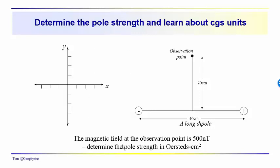We have a problem to solve. You are at an observation point 20 centimeters above the axis of a dipole. The distance between the poles of the dipole is 40 centimeters, and you are 20 centimeters above, along a line perpendicular to the axis of the dipole, located right at the center. The question is to determine the pole strength of an isolated pole in oersted centimeters squared, given that the magnetic field intensity at the observation point is 500 nanoteslas.